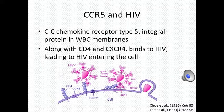CCR5 has a structure similar to that of other G protein coupled receptors. It contains seven transmembrane alpha helices, three intercellular loops, and three extracellular loops.